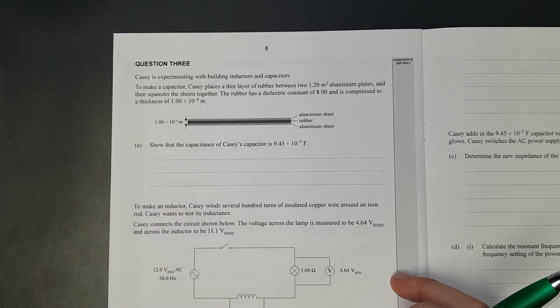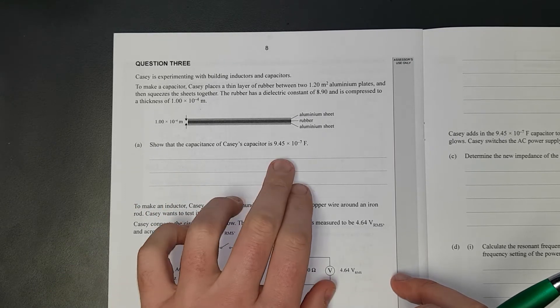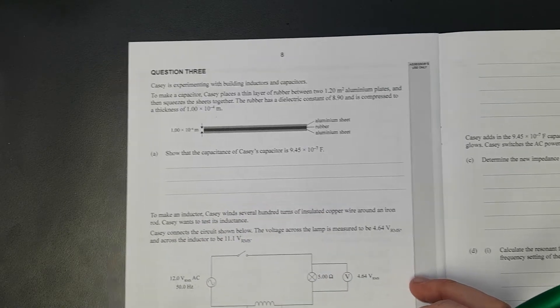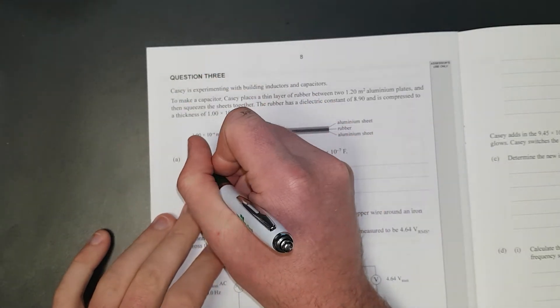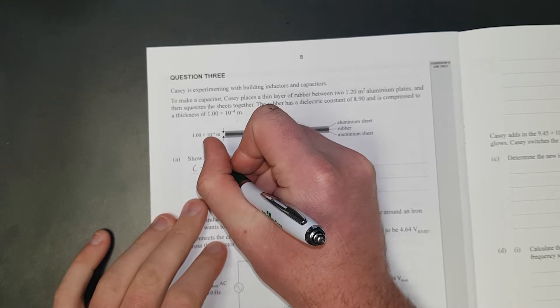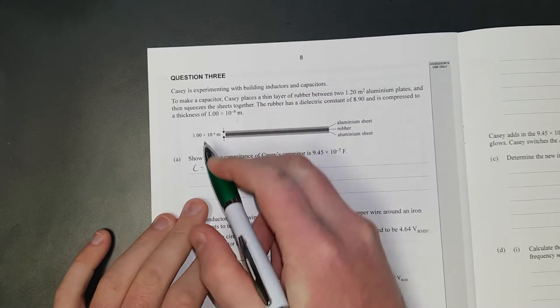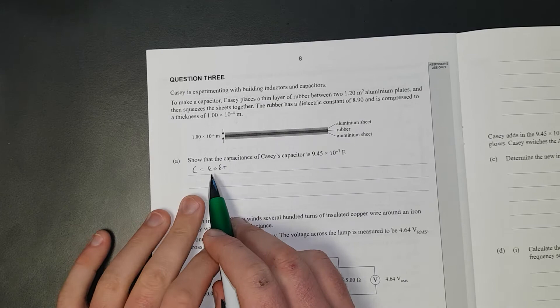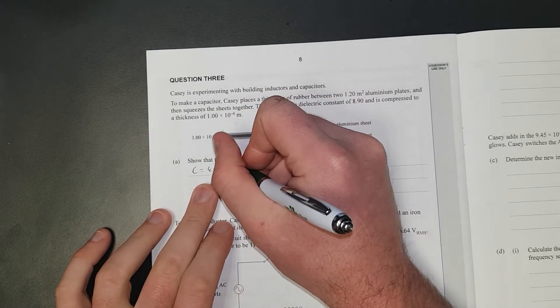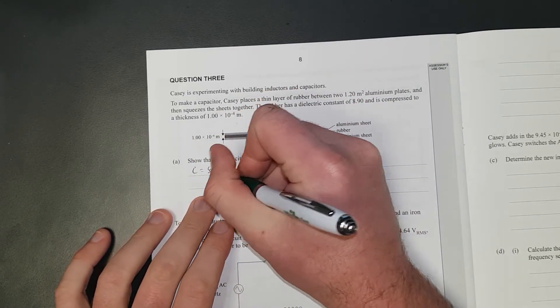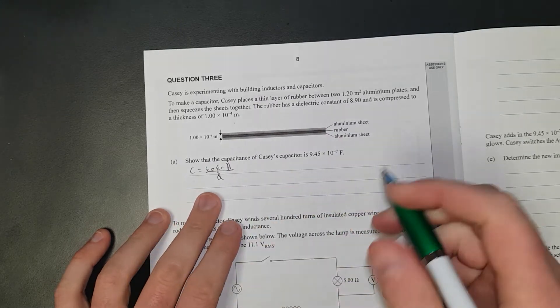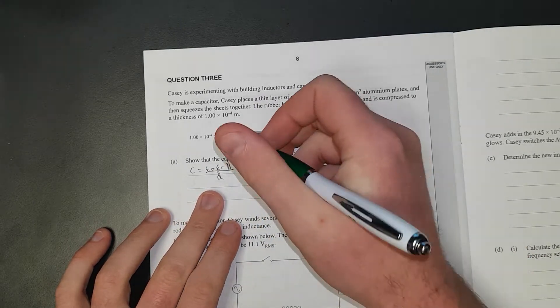It's 0.1 of a millimeter. Show that the capacitance of Casey's capacitor is the given value. This is a show question so you need to write a formula. The capacitance is equal to epsilon naught times the relative permittivity of free space times the dielectric constant times the area divided by the separation distance in any order.